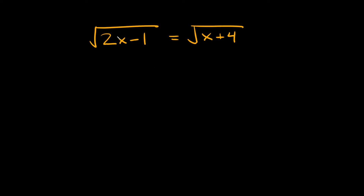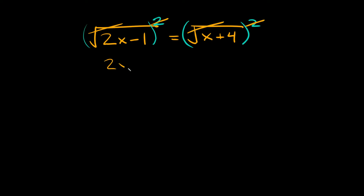Here we have a square root on both sides. You look at it and think, what am I going to do? — but it's actually easier than you think. In order to get rid of a square root you just have to square it, so we're going to square both sides. The square roots and the exponents cancel out on both sides, so we're left with 2x minus 1 is equal to x plus 4.